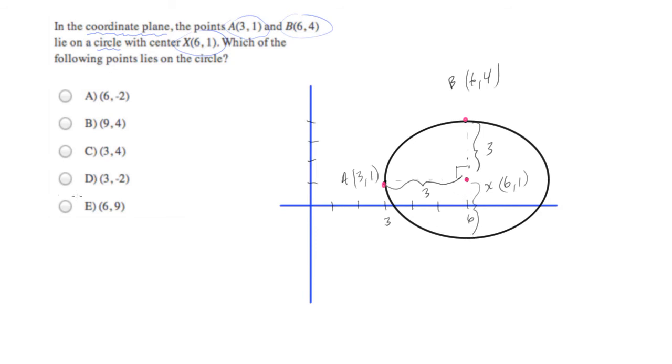The point 6, negative 2. Right. How did I figure that out? I went over 6 to the center of the circle. Instead of going up 3 from 1, 2, 3, 4, I went down 3 from 1, 0, negative 1, negative 2. And over to this point here.